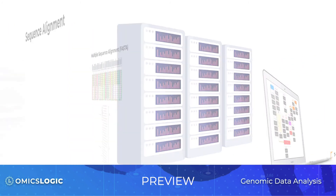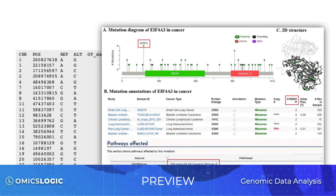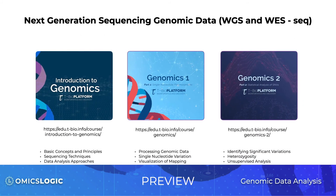One of the major objectives of genomics is linked to sequence alignment, which can refer to two types of alignment. To learn more about these analysis methods and their applications in various project examples, you can complete the genomics course series. This series will include a more expanded overview of key concepts, principles, and examples of genomic data analysis.